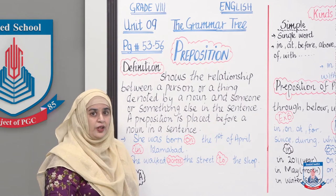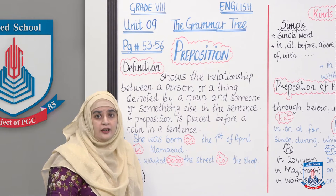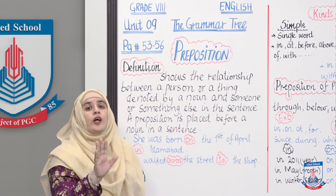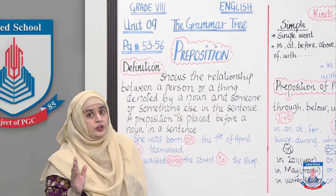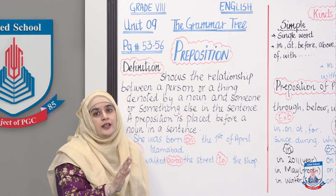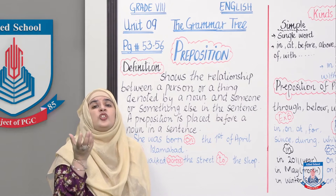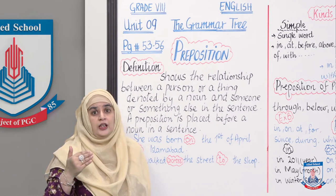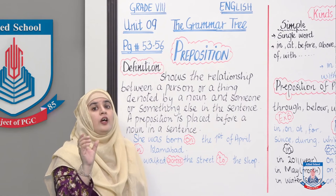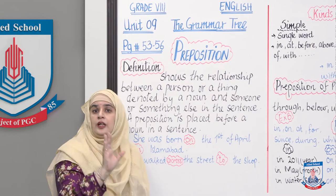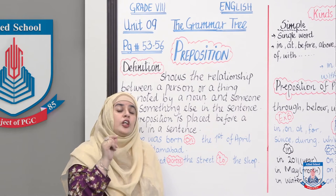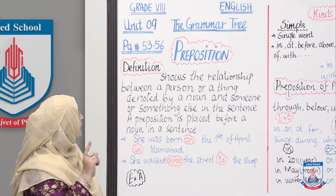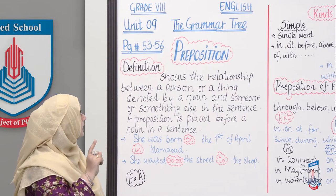Grade 8, what is the board telling you? The board is telling you that we are going to do Unit 9 of the Grammar Tree, which is preposition. As a layman's definition — you know what a preposition is. The book says that a preposition shows the relationship between a person or a thing denoted by a noun and someone or something else in the sentence.